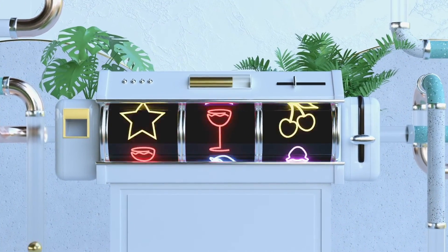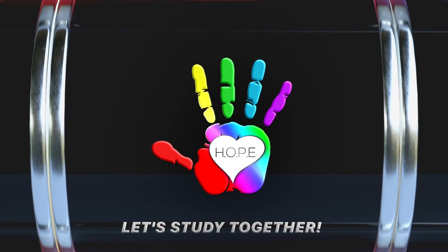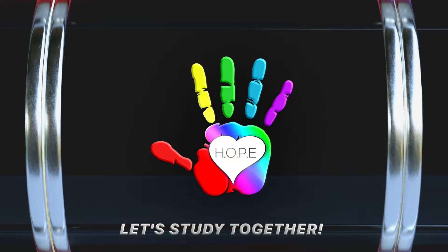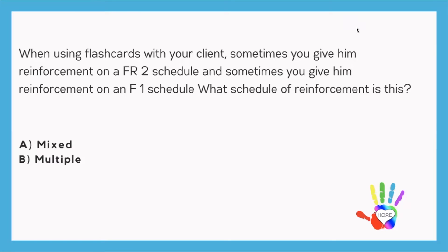So stay tuned as I go over some questions to really help you understand the difference. You can check this off your list that you know this part for the exam. What we're going to be looking for is: multiple has an SD, meaning the learner understands what the contingency is because there's a person, place, or day associated with that schedule of reinforcement. Mixed means one behavior with two schedules of reinforcement but no clear SD present.